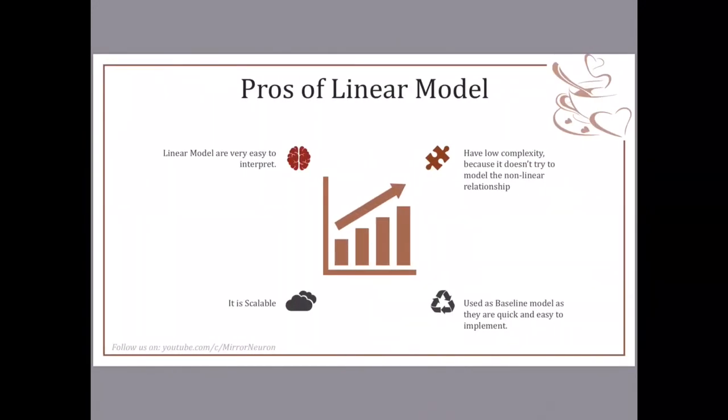Highly intelligible and simple to explain. Second, it has low complexity. What does it mean? It means here it is not trying to catch any non-linear activity. The relationship between TV and sales is not a non-linear thing. We will see in our Python code what is meant by non-linearity.